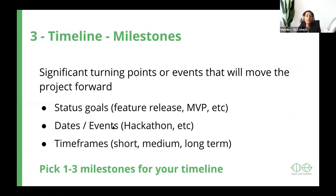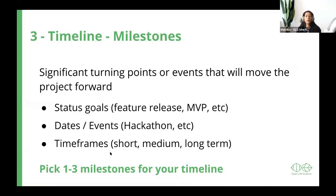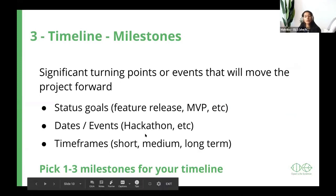You can have a status goal — for example, a feature release or a minimum viable product. You can also be hosting an event, such as giving a talk, attending a hackathon, or hosting a community call. You can also define milestones by time frame at three levels: short term, medium term, and long term. Anyone available right now can get involved in the short term, while people who want to come back would be looking at medium and long term milestones.